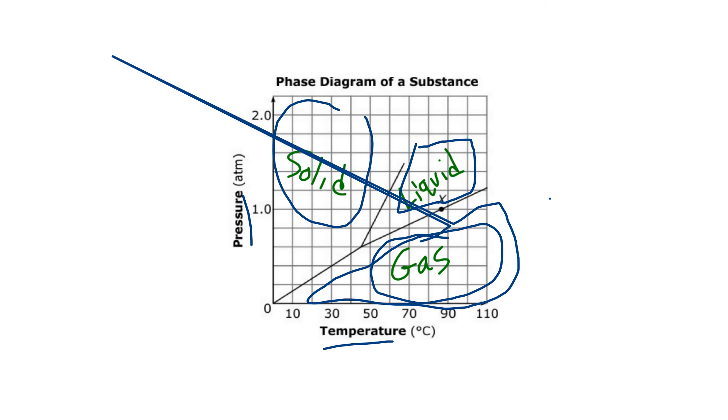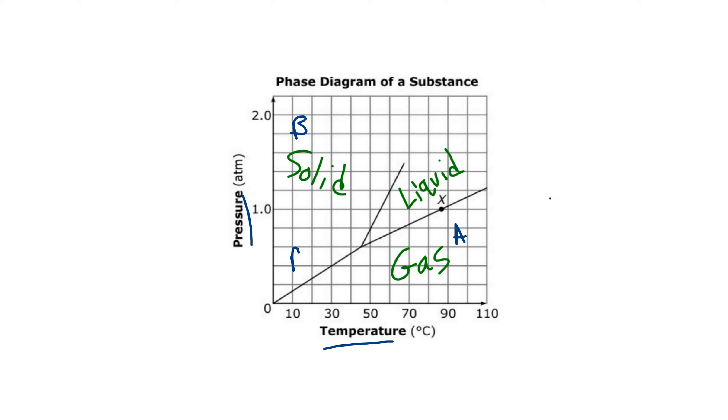Now, if I ask you what state of matter A is in, it's a gas. If I ask you what state of matter B is in, it's a solid. How about C? That's a solid. How about D? That's a liquid.